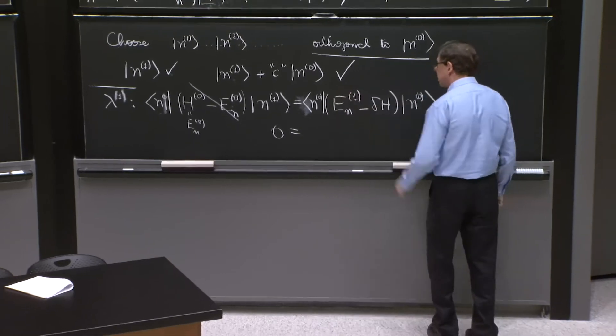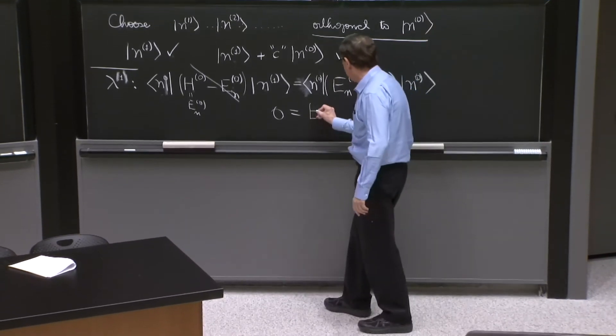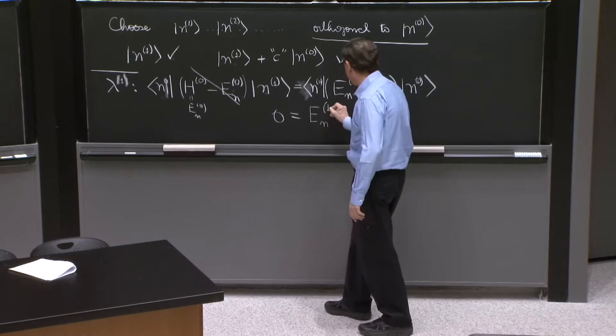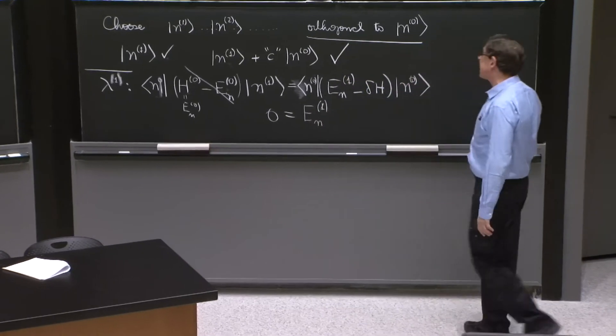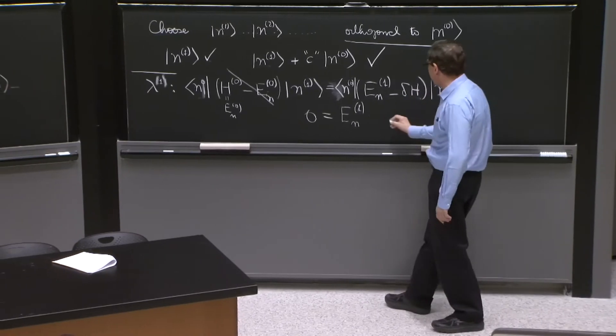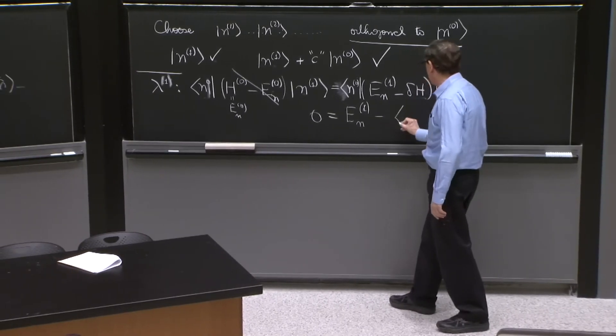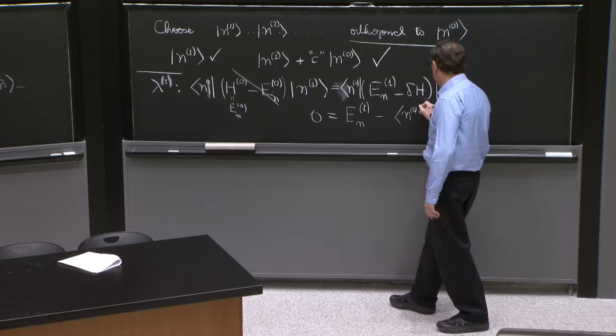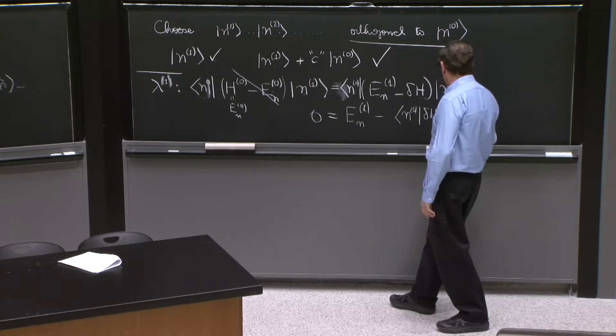n0 has unit expectation value, so this is En1. That's the number. And then I have an operator here. So this is minus n0 delta h n0.